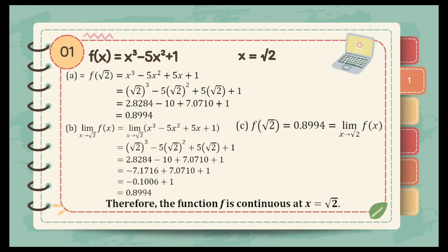For our first item, f of x is equal to x cubed minus 5x squared plus 1 and the value of x is equal to the square root of 2. For letter A, we just need to substitute the square root of 2 to the given function. Hence, we can get the square root of 2 cubed, which is 2.8284, minus 5 times the square root of 2 squared, which equals negative 10, plus 5 times the square root of 2, which is 7.0710, plus 1. Adding all values, we get 0.8994.